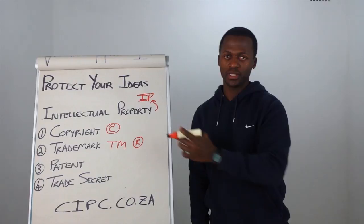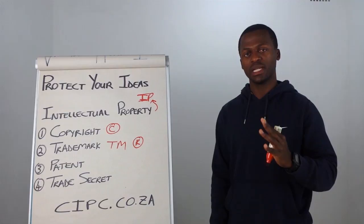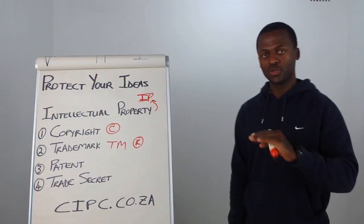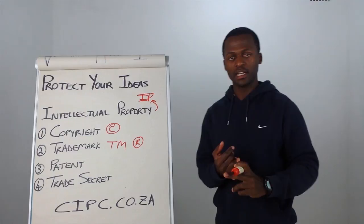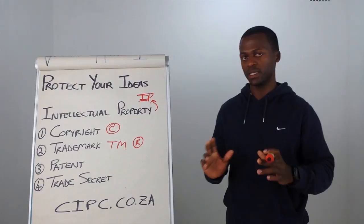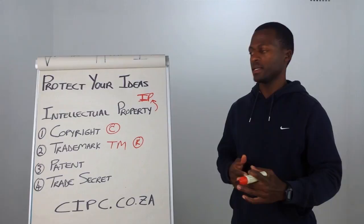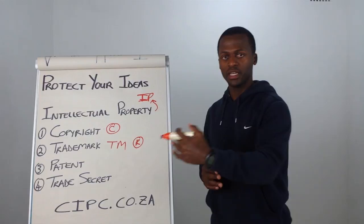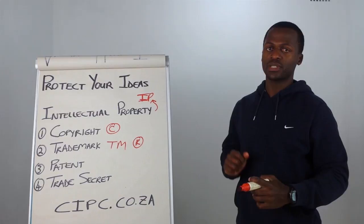When you're talking intellectual property, there are four main ways of protecting whatever idea that you have. Way number one is copyright. When it comes to copyright, it mostly involves content. So if you're writing a book, writing an article, or you wrote a song, a video, or made a documentary, that is where you would go for copyright. With copyright, you don't necessarily have to make any registrations — as soon as you put it out there into the public, you automatically get copyright. But that is for South Africa.